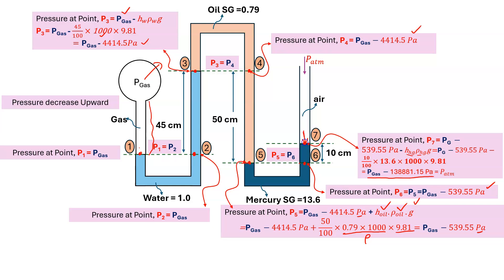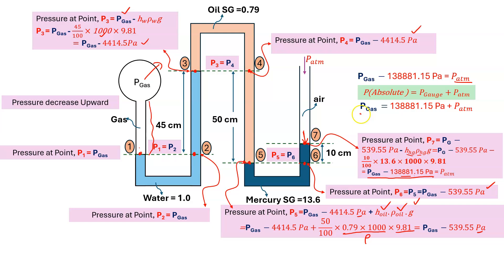The right-hand side column is open to atmosphere, so atmospheric pressure is acting at point 7. Therefore: P_gas minus 138881.15 Pa = P_atm. Rearranging, P_gas = 138881.15 Pa plus P_atm. Comparing with P_absolute = P_gauge plus P_atm, the gauge pressure of the gas is P_gas(gauge) = 138881.15 Pa.